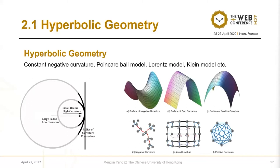On the right side, there are figures with negative, zero, and positive curvature. The curvature concept can also be generalized to graphs: negative curvature corresponds to tree-like areas, zero curvature to grid-like areas, and positive curvature to densely connected areas. In this work, we focus on the continuous space with negative curvature, that is, hyperbolic space.